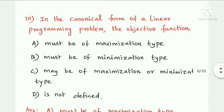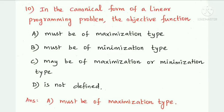Next question: in the canonical form of the linear programming problem, the objective function must be of maximization type, must be of minimization type, is not defined, or may be of maximization or minimization type. The canonical form of the linear programming problem is the maximization type. Option A is the answer: must be of maximization type.